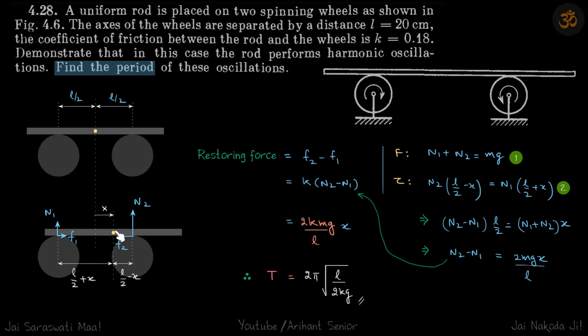Let's calculate about this point. The torque is n2 into this distance, which is l by 2 minus x. This original distance was l by 2, so now this distance is l by 2 minus x. This must be balanced by this torque, which is n1 into l by 2 plus x. So n2 times (l/2 minus x) equals n1 times (l/2 plus x). We have two equations.